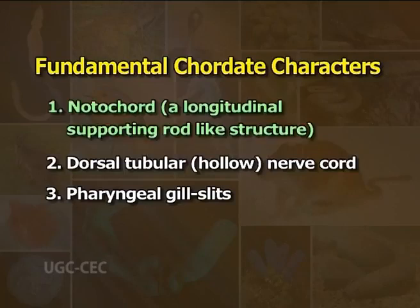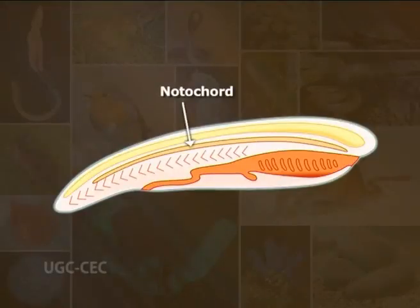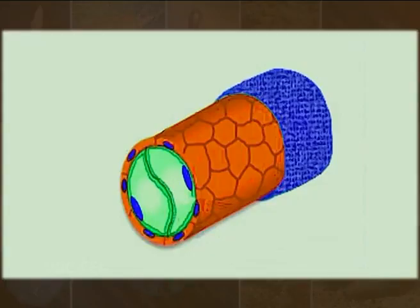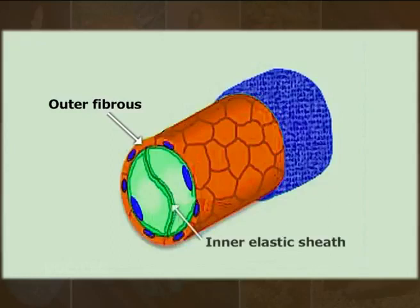Number one: notochord or chorda dorsalis. The notochord, from two Greek words — noton meaning back and chorda meaning chord — is a rod-like elongated elastic structure situated just above the alimentary canal and immediately beneath the dorsal tubular nerve chord. It is composed of large vacuolated notochordal cells enclosed in an outer fibrous and an inner elastic sheet of connective tissue.